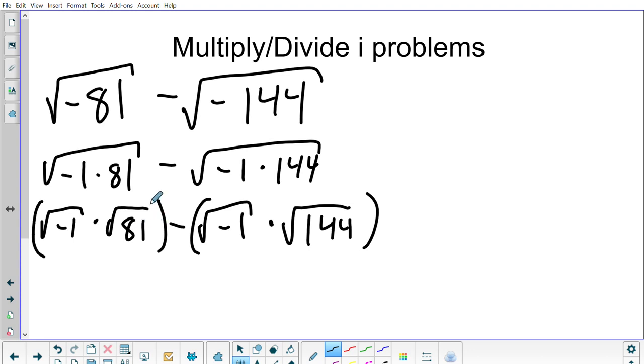The root of 81 is plus or minus 9 minus 12.